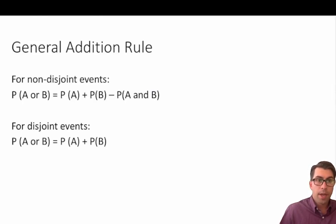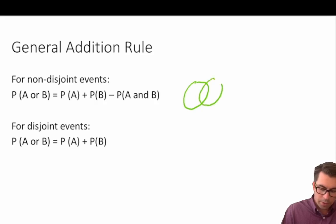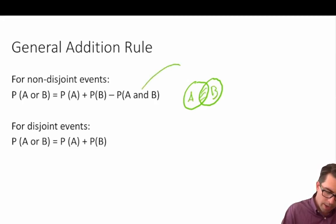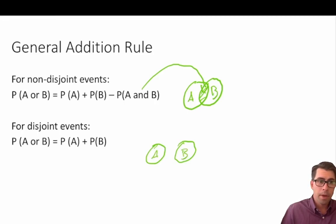Here's our general addition rule for non-disjoint events: the probability of A or B is equal to the probability of A plus the probability of B minus the probability of A and B — where A and B is the overlapping shaded region. For disjoint events, the probability of A or B is simply equal to the probability of A plus the probability of B, since there is no moment of overlap where these events occur at the same time.